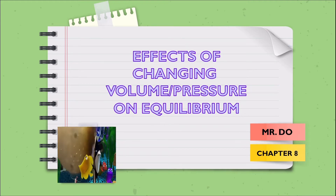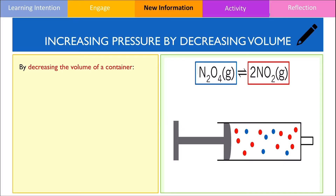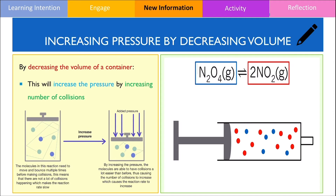We should be able to recall from chapter 7 that decreasing the volume of a gaseous system increases the pressure because it increases the frequency of collisions on the walls of the container.